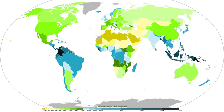The five primary classifications can be further divided into secondary classifications such as rain forest, monsoon, tropical savanna, humid subtropical, humid continental, oceanic climate, Mediterranean climate, steppe, subarctic climate, tundra, polar ice cap, and desert.